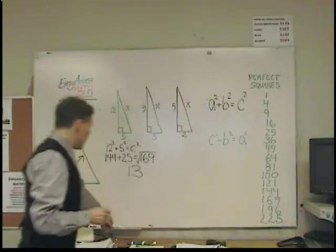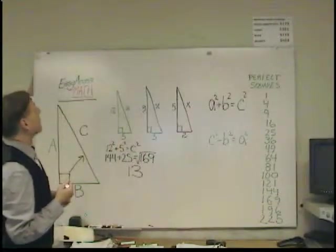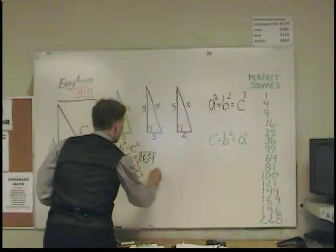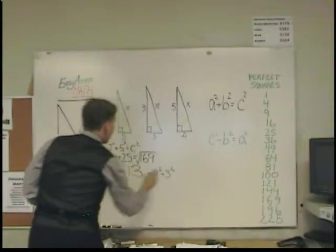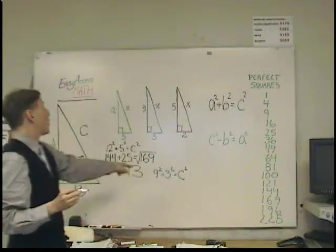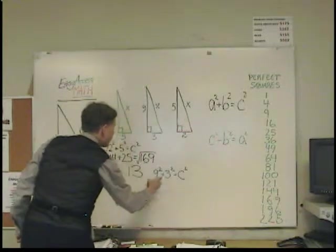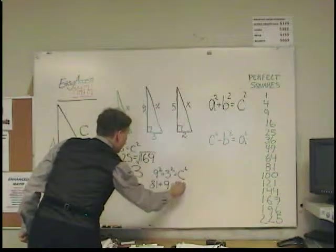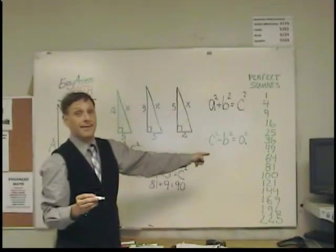Now, let's look at this second one, this blue triangle over here, and there I have 9 squared plus 3 squared equals C squared. 9 times 9 is 81, plus 3 times 3 is 9, and that gives me 90. 90 is not on my list. 90 is not there.